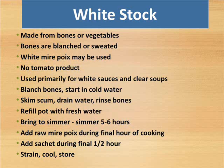White stock is made from bones or vegetables. Bones are blanched or sweated. White mirepoix may be used. No tomato product is added. Used primarily for white sauces and clear soups. To prepare: blanch bones, start in cold water, skim scum, drain water, rinse bones, refill pot with fresh water, bring to simmer, simmer 5–6 hours. Add raw mirepoix during the final hour of cooking. Add sachet during the final half hour. Then strain, cool and store.